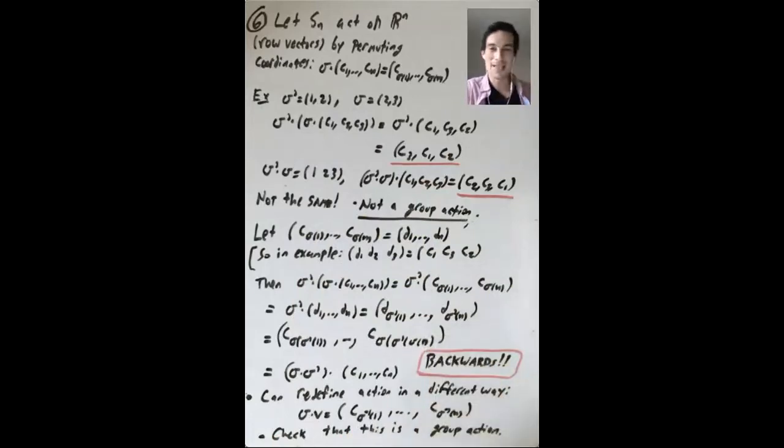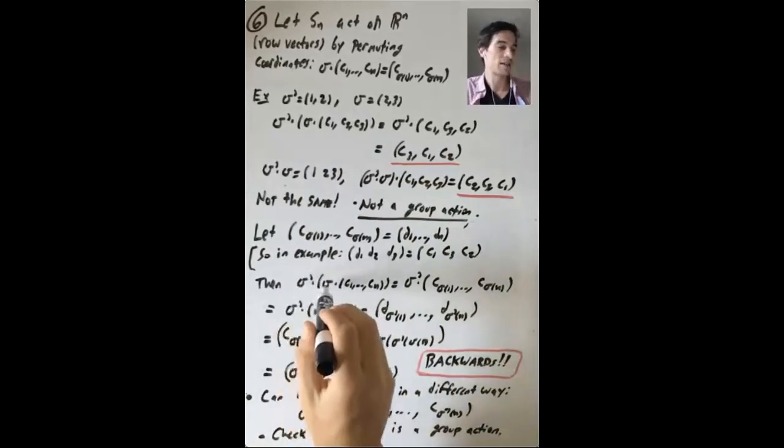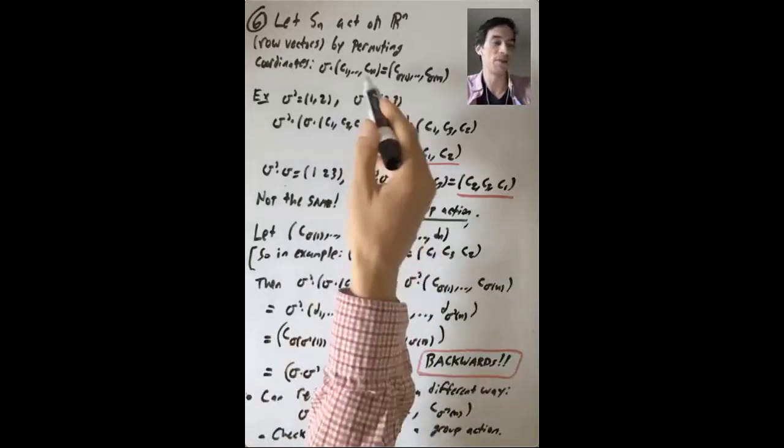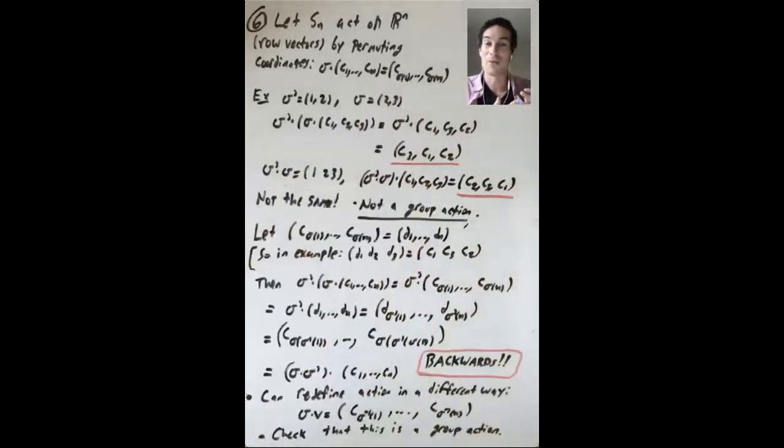But what is that? This is sigma times sigma prime of 1, sigma times sigma prime of n. So this is the group element sigma times sigma prime acting on this vector, (c1 up through cn). But that's not what we want in this group action. That's backwards. Right? We want sigma prime acting on sigma acting on a vector to be the product sigma prime times sigma acting on that vector. And here this is backwards.